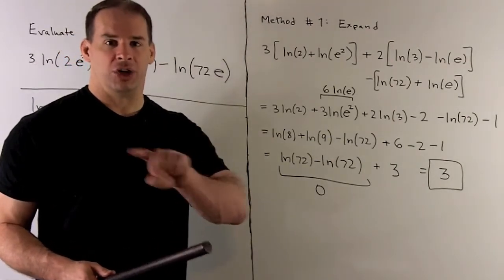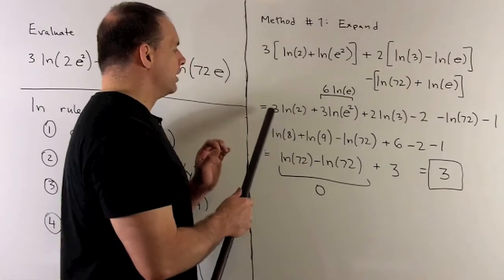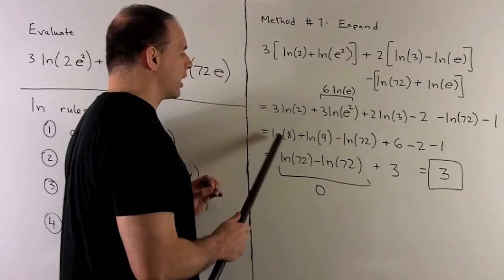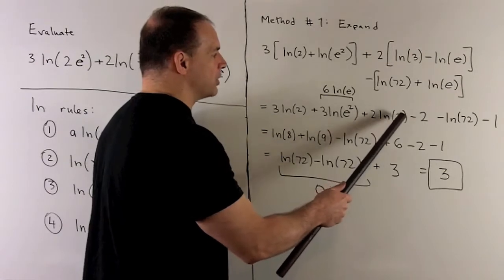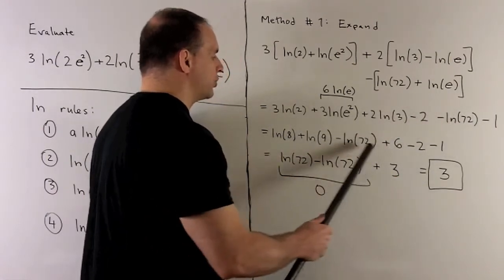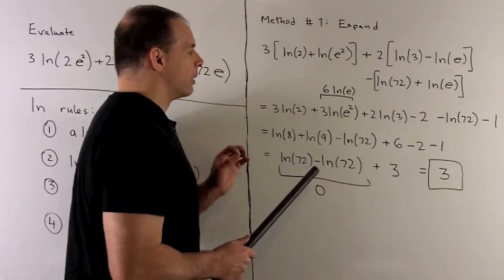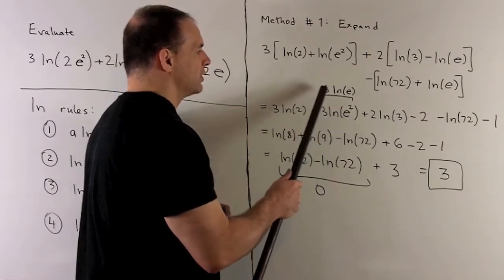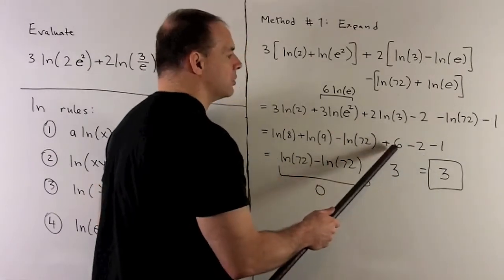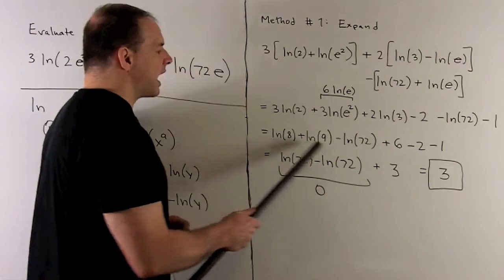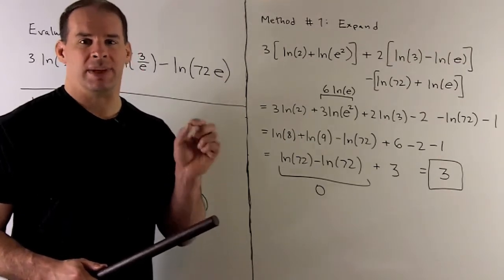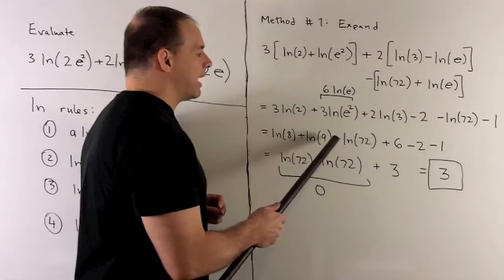Now let's collect the natural log of integer terms. We push the 3 and the 2 inside as exponents: 3 times natural log of 2 becomes natural log of 2 cubed, or natural log of 8; and 2 times natural log of 3 becomes natural log of 9. Then we have minus natural log of 72. For the remaining terms, 6 natural log of e equals 6, minus 2, minus 1 collapses to 3. Natural log of 8 plus natural log of 9 combines as a product to give natural log of 72, which then cancels with minus natural log of 72, leaving 0.